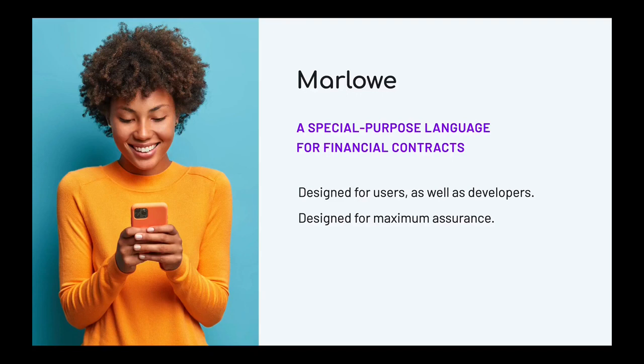When we write a special purpose language, we get some advantages. We can write down things in that domain, but perhaps not as much as we could in a general purpose language. Working in this more specialized context gives us the advantage of being able to provide better feedback, better error messages, and more importantly, more guarantees on program behavior. That's one of the things I'm going to stress in this lecture.